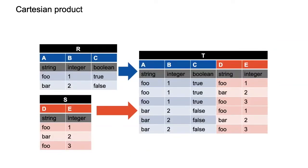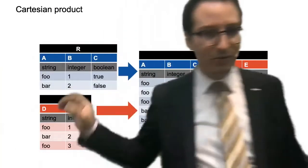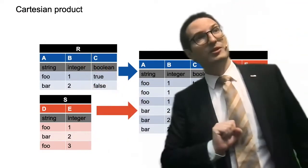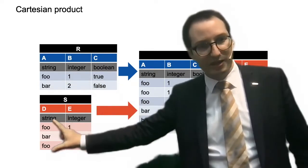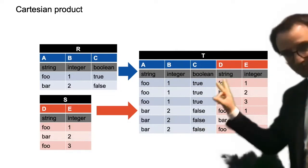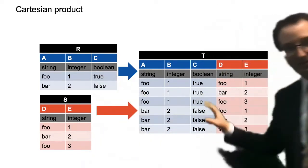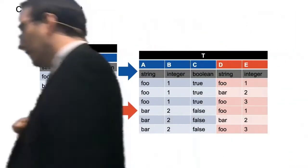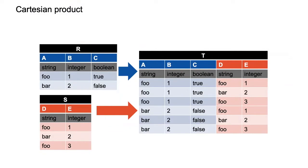A Cartesian product means you have two tables and compute their Cartesian product. The Cartesian product of a set of two records and a set of three records gives two times three — six records. It's all possible combinations. This is big data, so each input table might have a billion rows. A billion times a billion would give you a quintillion rows — just have the intuition that this is going to break. So a Cartesian product is usually something you want to avoid.